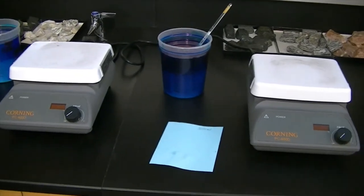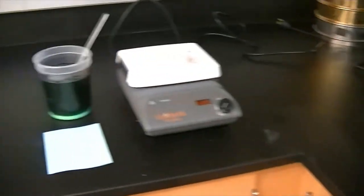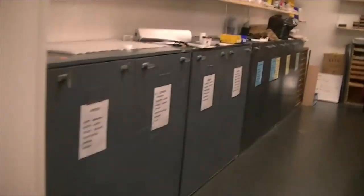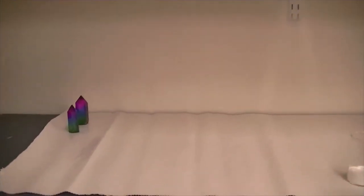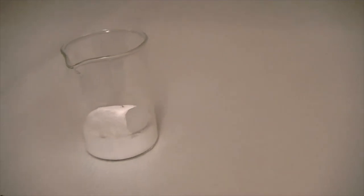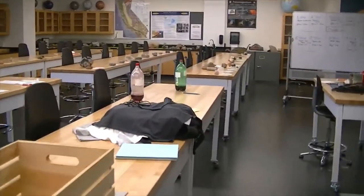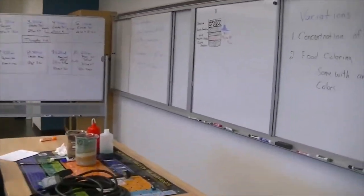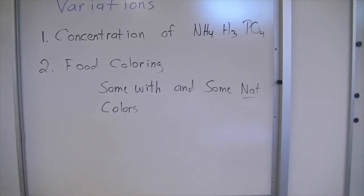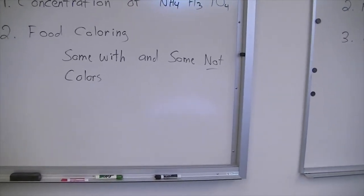Our job now is to write hypotheses. These crystals are going to be moved into the back room — they're all going to be in the same environment, covered up, and growing on the same white table so nobody bothers them. Remember, we started out with ammonium phosphate powder. What's different about this experiment is simply the concentrations and the amount of food coloring — some had food coloring and some did not.